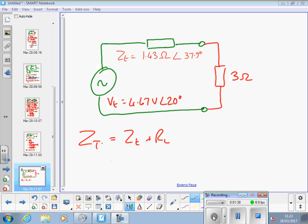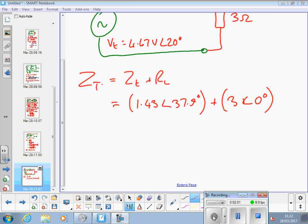So then, how have you done that, Mike? 1.43 angle 37.9 plus 3 angle 0 degrees. And then, convert to polar, rectangular, sorry. Convert to rectangular.